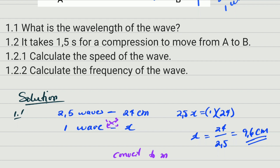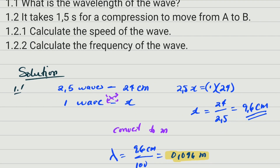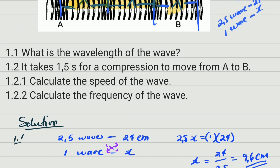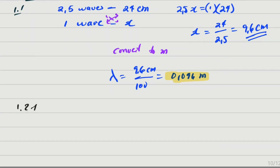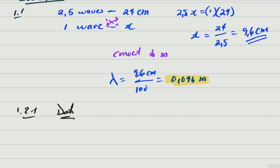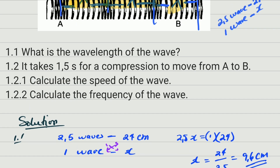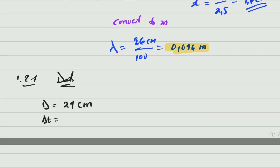Now it takes 1.5 seconds for the compression to move from A to B. We're going to calculate the speed of the wave. Let's list the data: the distance covered is 24 centimeters, the time is 1.5 seconds. Converting the distance to meters gives 0.24 meters.